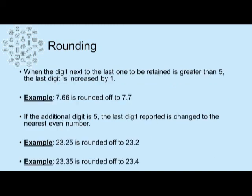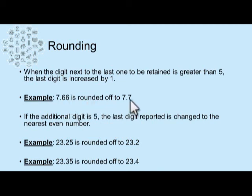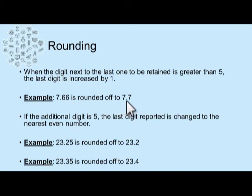When the digit next to the last one to be retained is greater than five, the last digit is increased by one. For example, 7.66 — in the hundredths place it's a six, which is greater than five. So we round off the last digit, increasing it by one. 7.66 would be rounded up to 7.7.